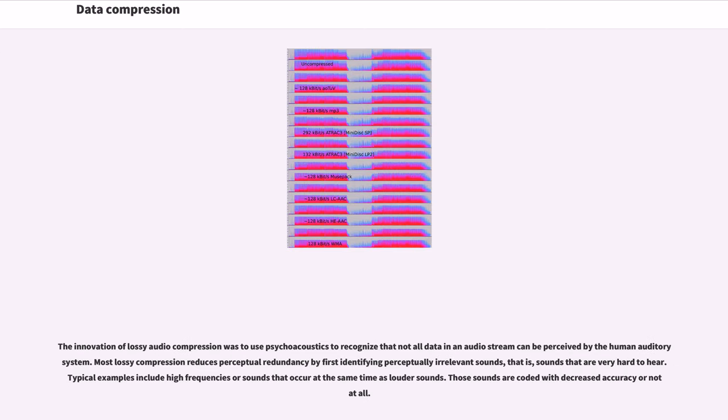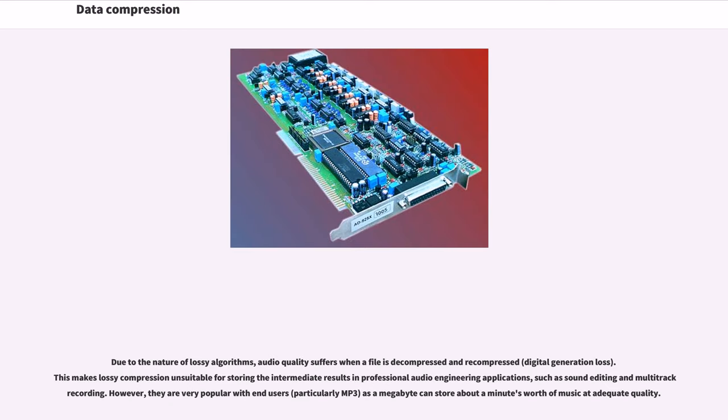The innovation of lossy audio compression was to use psychoacoustics to recognize that not all data in an audio stream can be perceived by the human auditory system. Most lossy compression reduces perceptual redundancy by first identifying perceptually irrelevant sounds, that is, sounds that are very hard to hear. Typical examples include high frequencies or sounds that occur at the same time as louder sounds. Those sounds are coded with decreased accuracy or not at all. Due to the nature of lossy algorithms, audio quality suffers when a file is decompressed and recompressed, digital generation loss.